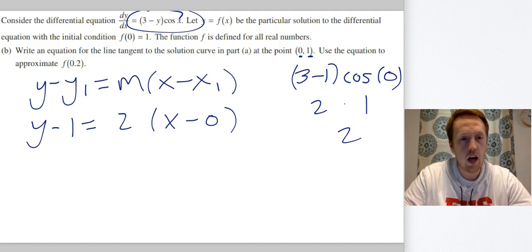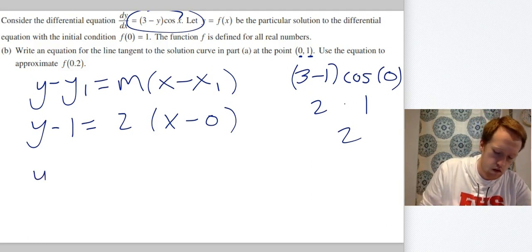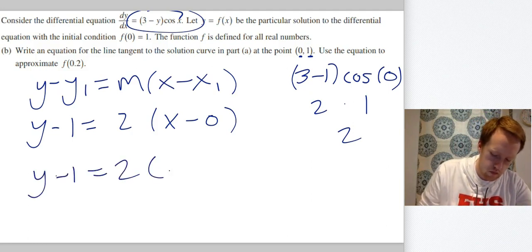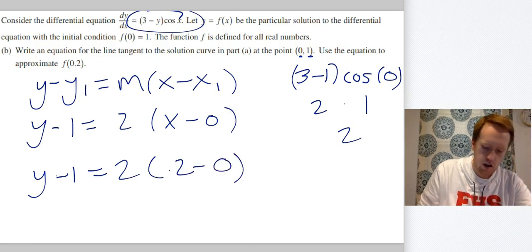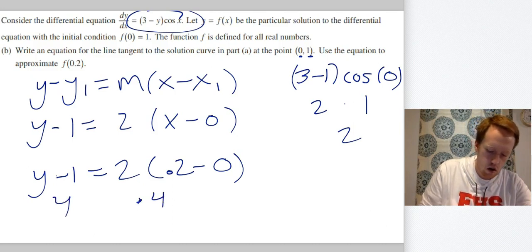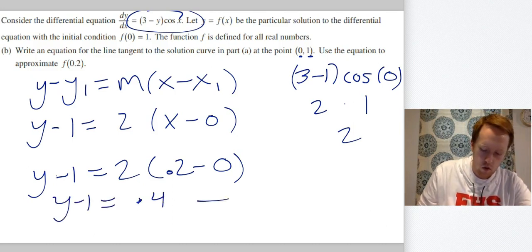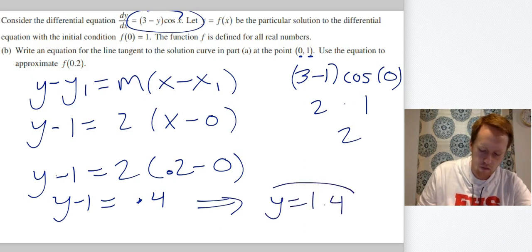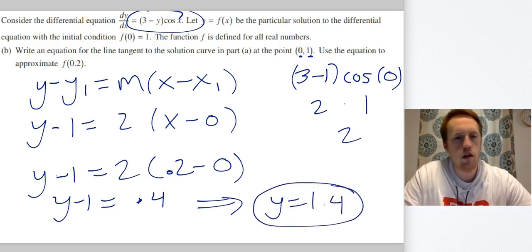All right. Now that I have my tangent line, I need to use it to approximate f(0.2). So I'm just going to plug 0.2 in for x. All right. So 0.2 times 2 is going to be 0.4. Move the 1 over, you get y = 1.4. There we go.